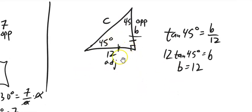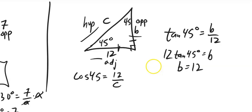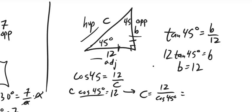And then to get c, I've got adjacent and hypotenuse—that's going to be, that screams cosine to me. Cosine of 45 degrees is adjacent over hypotenuse. Multiply by c, divide by cos 45.